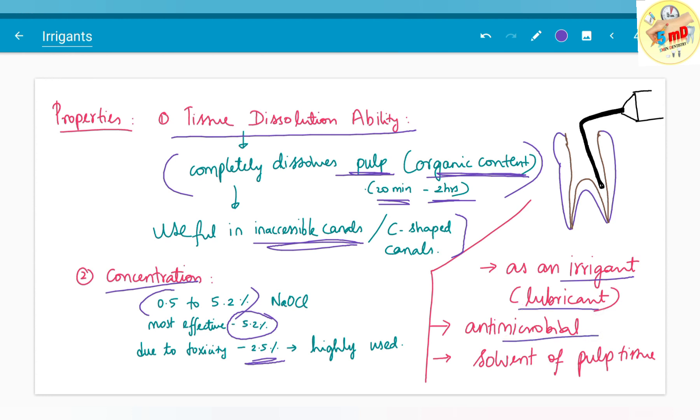Because of these properties - as a lubricant, antimicrobial agent, and solvent of pulp tissue - it is the most commonly used irrigant solution.